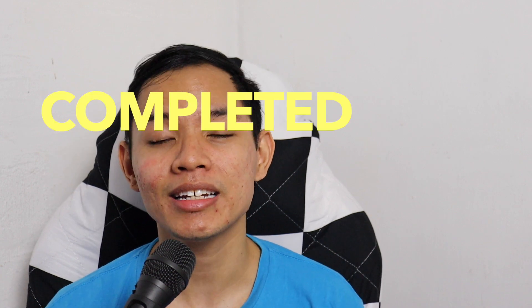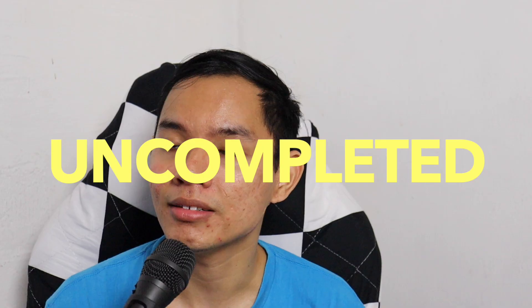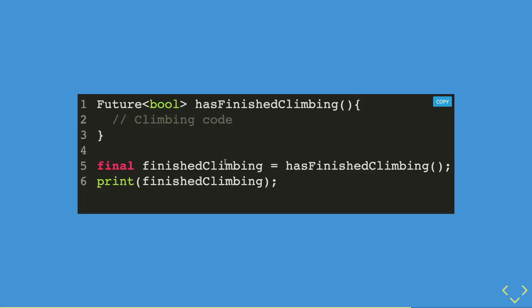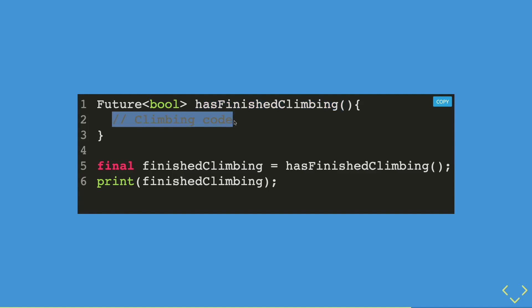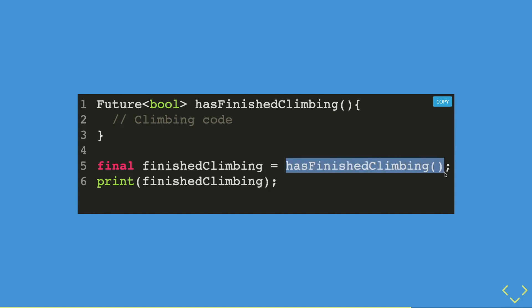Now we understand what asynchronous programming is. The next thing is these two states: completed and uncompleted. Let's start with uncompleted. I have an example code here — this is a future function that returns a boolean and it is called has_finished_climbing. Inside it is pretty simple climbing code. Then I have a final variable called finished_climbing that calls the has_finished_climbing future function.